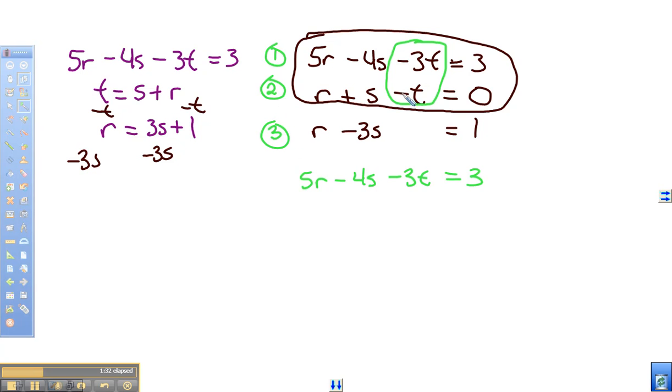So we're going to take negative 3 times equation 2. Negative 3 times equation 2 will give us negative 3R minus 3S plus 3T is going to equal 0. And now I can add those two equations.